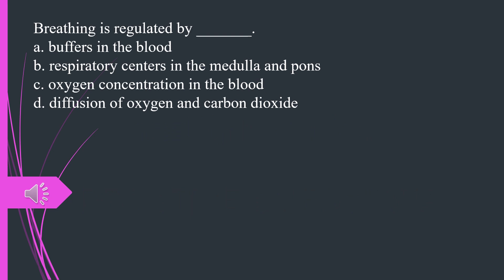Question 1. Breathing is regulated by A. Buffers in the blood B. Respiratory centers in the medulla and pons C. Oxygen concentration in the blood D. Diffusion of oxygen and carbon dioxide. The answer is B, respiratory centers in the medulla and pons.